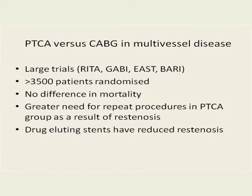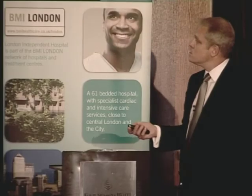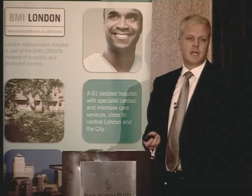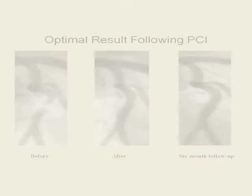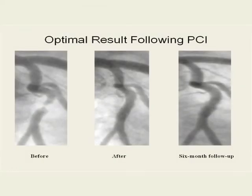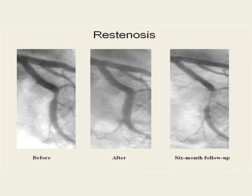In multi-vessel — three-vessel — disease, every trial that's been done has shown the same thing: no difference between PCI and bypass surgery in terms of hard endpoints of mortality, but there is a greater need for repeat procedures with angioplasty because of re-stenosis. Re-stenosis is when you get furring up of the artery again within the first six months. Drug-eluting stent therapy has dramatically reduced the risk of re-stenosis.